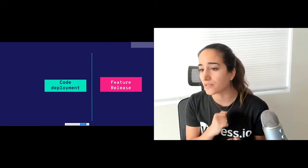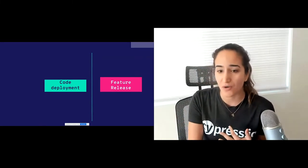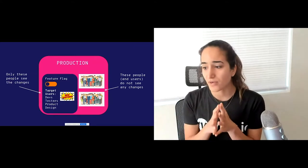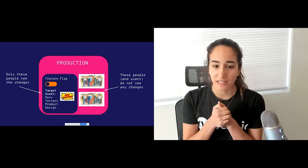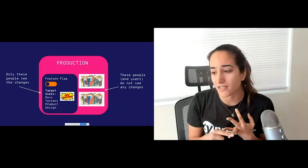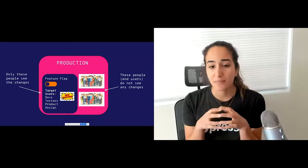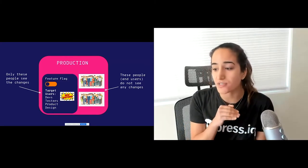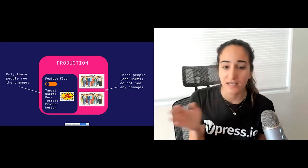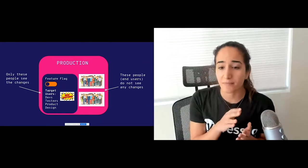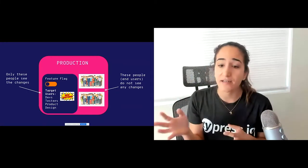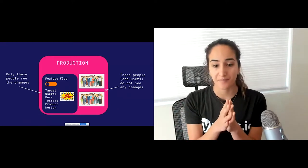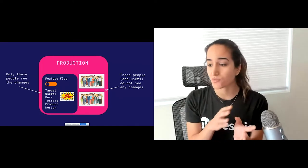Feature flags are just a way to separate code deployment from feature release. You deploy your code to production behind a feature flag, test it in production, and then release the feature when it's bug-free. Basically, you create a feature flag from the UI and then target your internal teammates — your devs, testers, product, design. All of these people are targeted in your feature flag. Anything related to this feature can only be seen by the users inside of that feature flag. The toggle is off by default, so real end users are not going to see anything related to that feature.